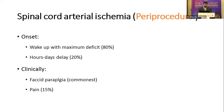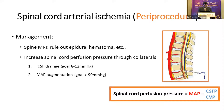Most patients wake from anesthesia with maximum deficit — this occurs in 80% of cases — but there may be a delay of hours to days in some patients. Most commonly we see flaccid paraplegia, but one-third will have less severe deficit. Pain is uncommon in periprocedural spinal cord ischemia. For management, the first step is MRI to rule out a treatable cause like epidural hematoma; otherwise, we aim to increase spinal cord perfusion pressure by augmenting mean arterial pressure and decreasing CSF pressure with a lumbar drain.